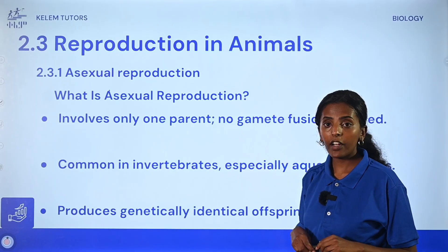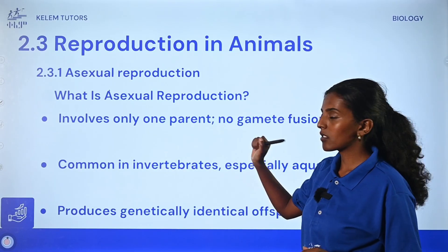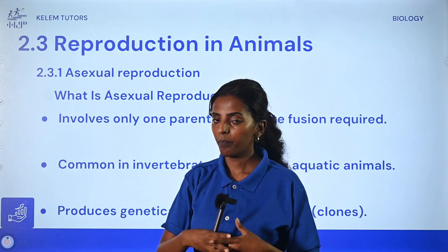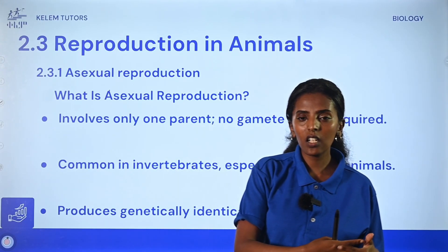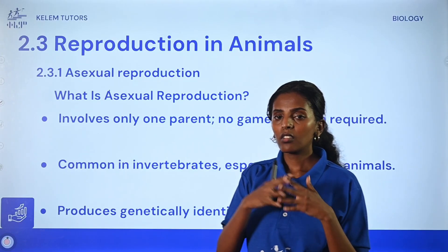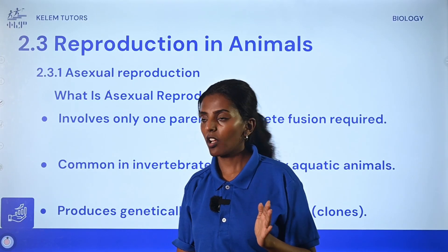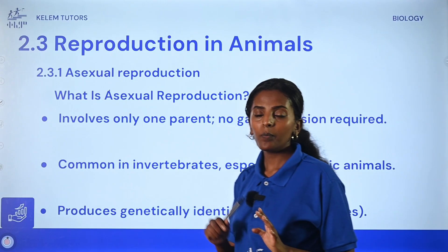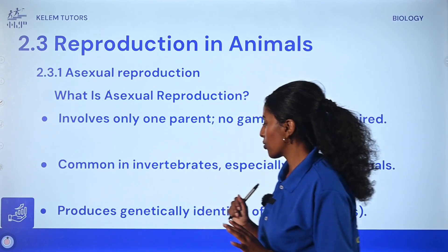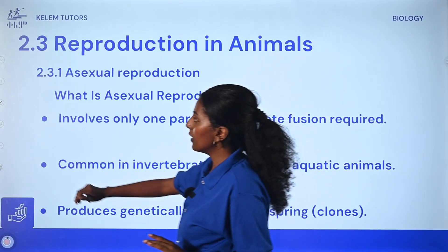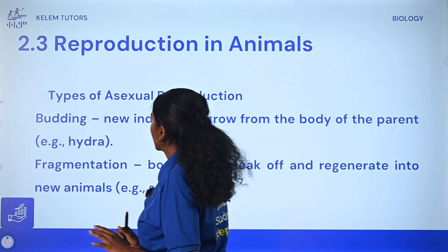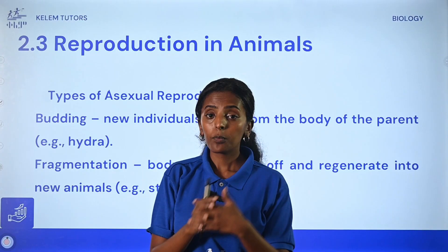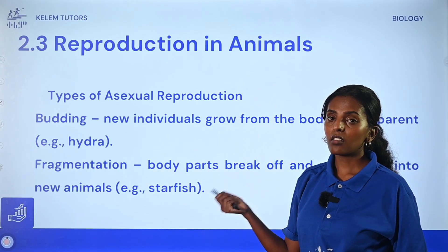So to recap — asexual reproduction involves one parent and does not require the fusion of two gamete cells. There is only one parent. It is commonly found in invertebrate animals, and produces genetically identical organisms. Asexual reproduction represents only a minority of reproduction types.